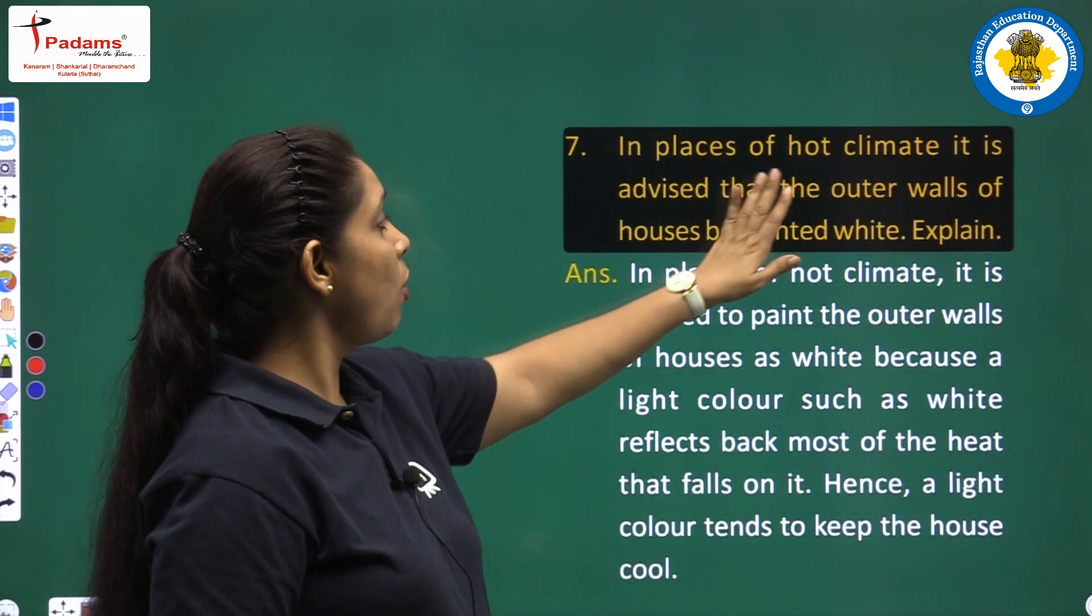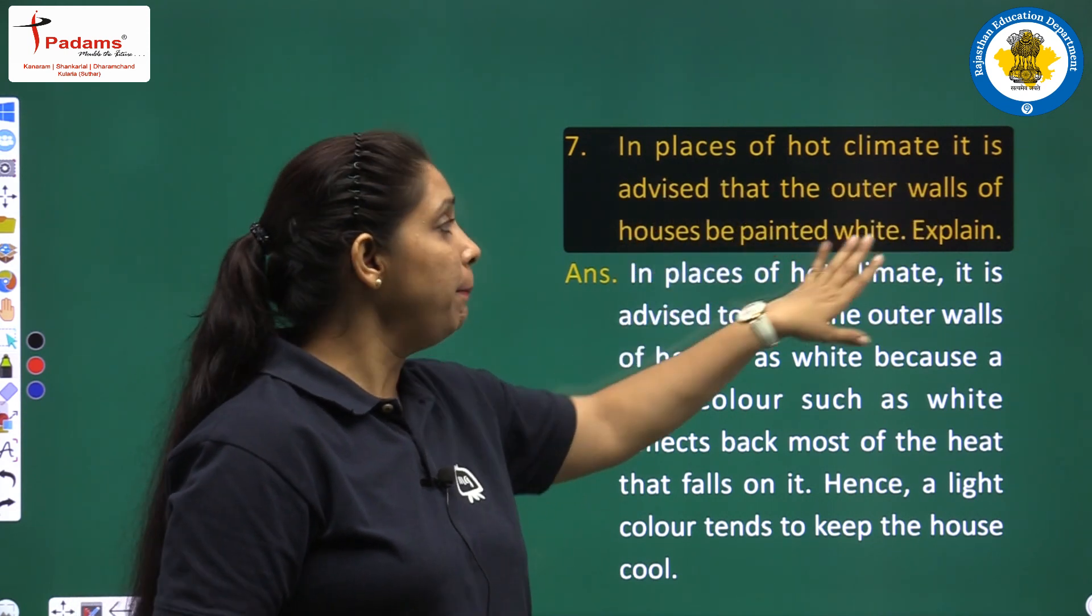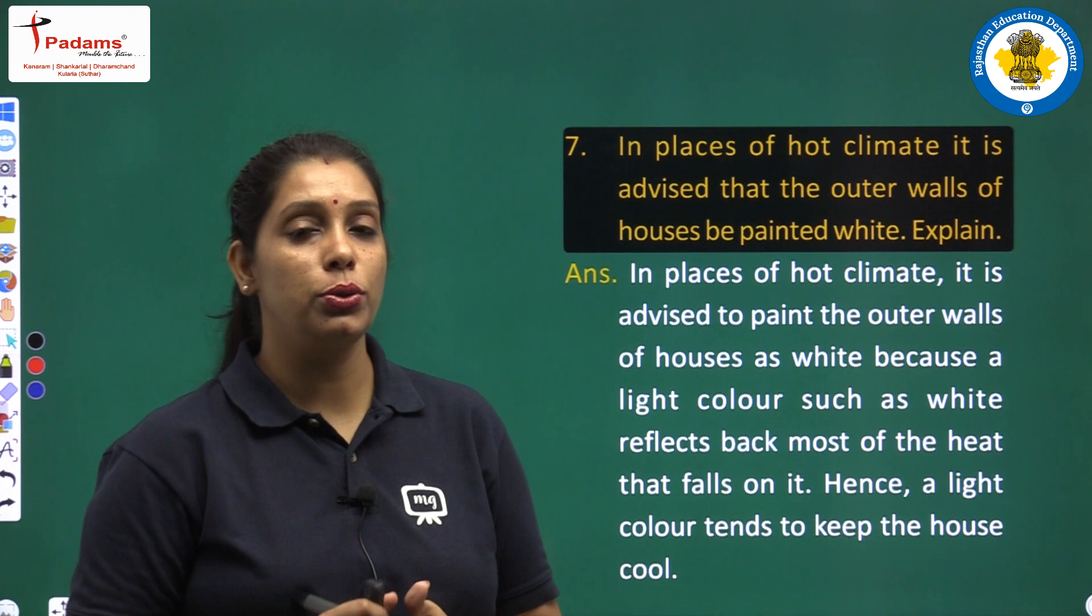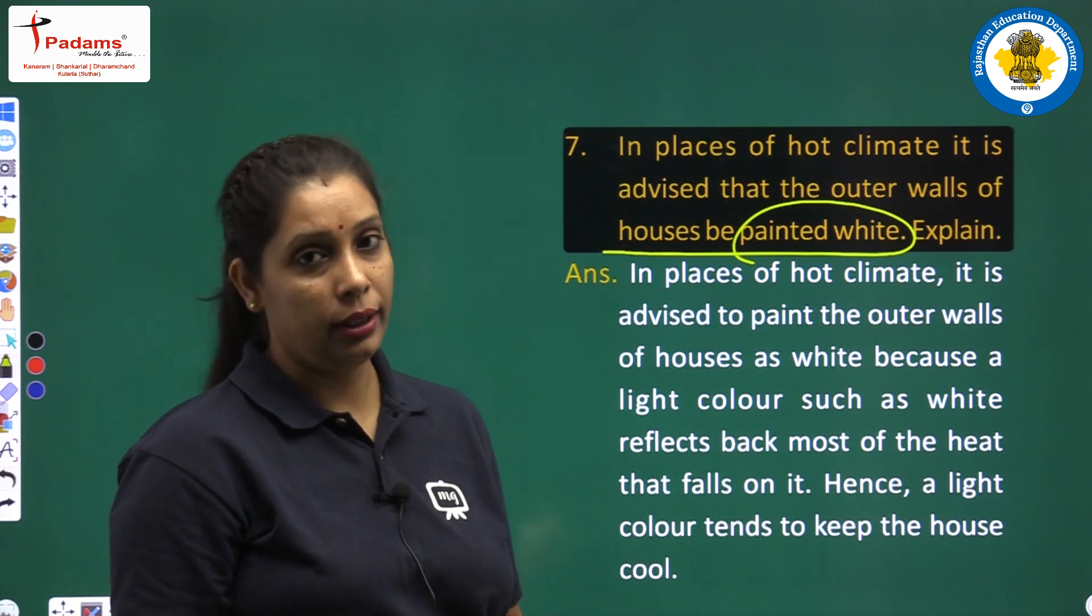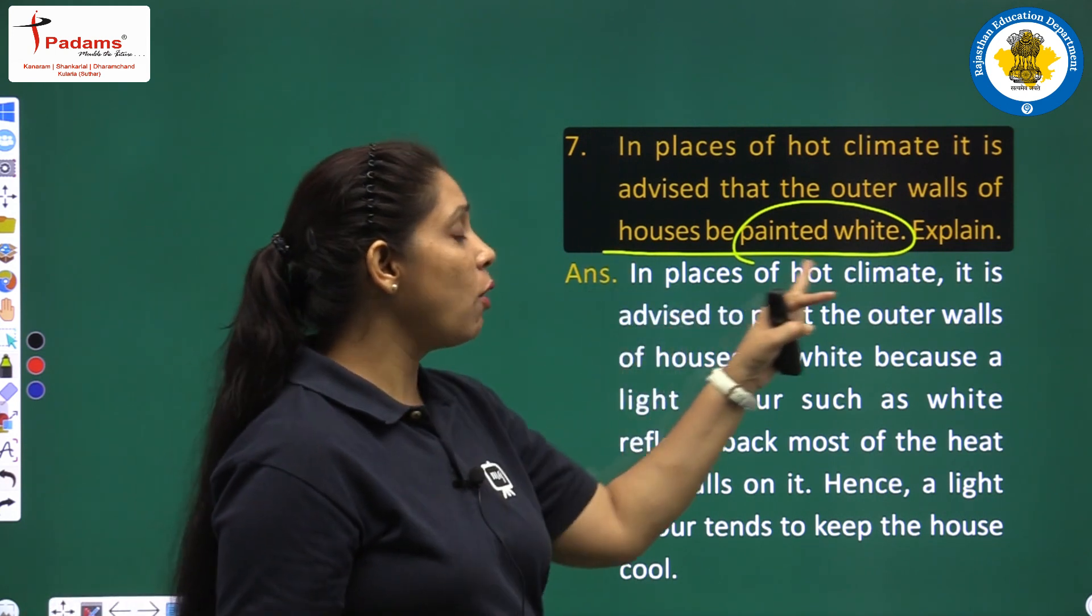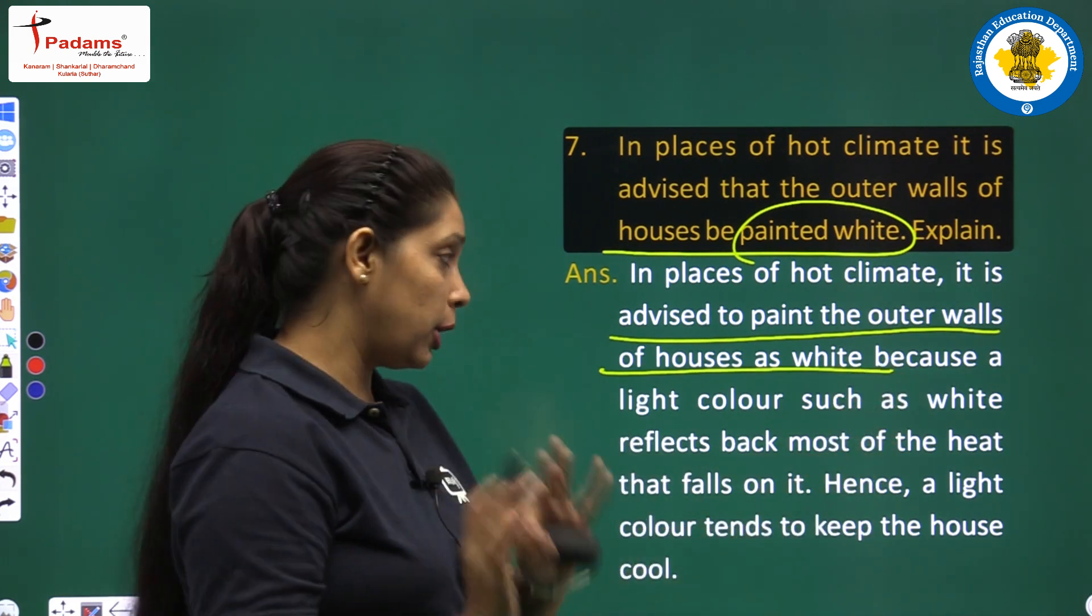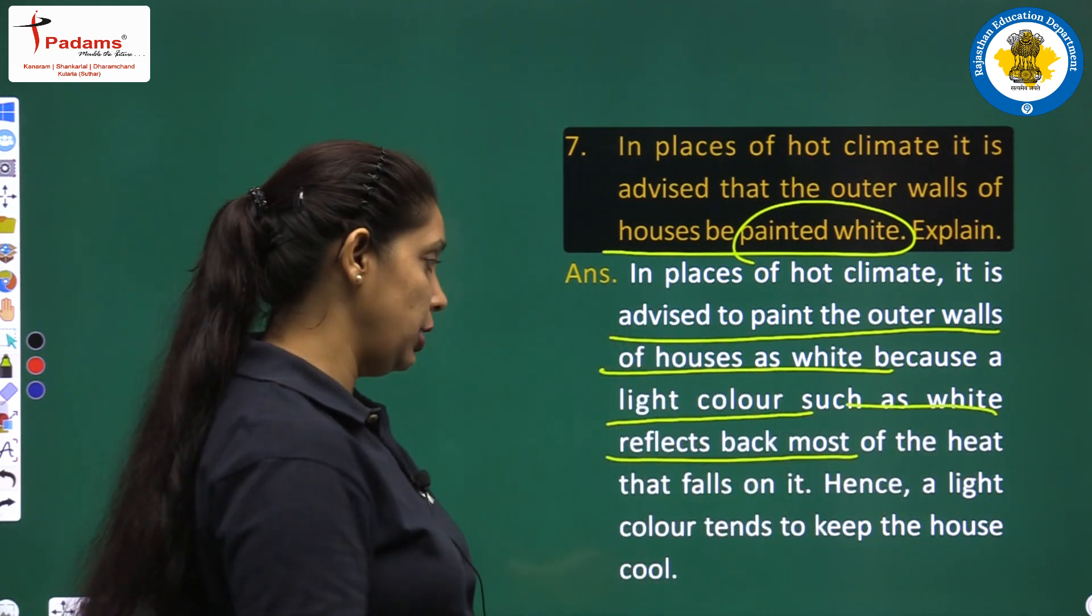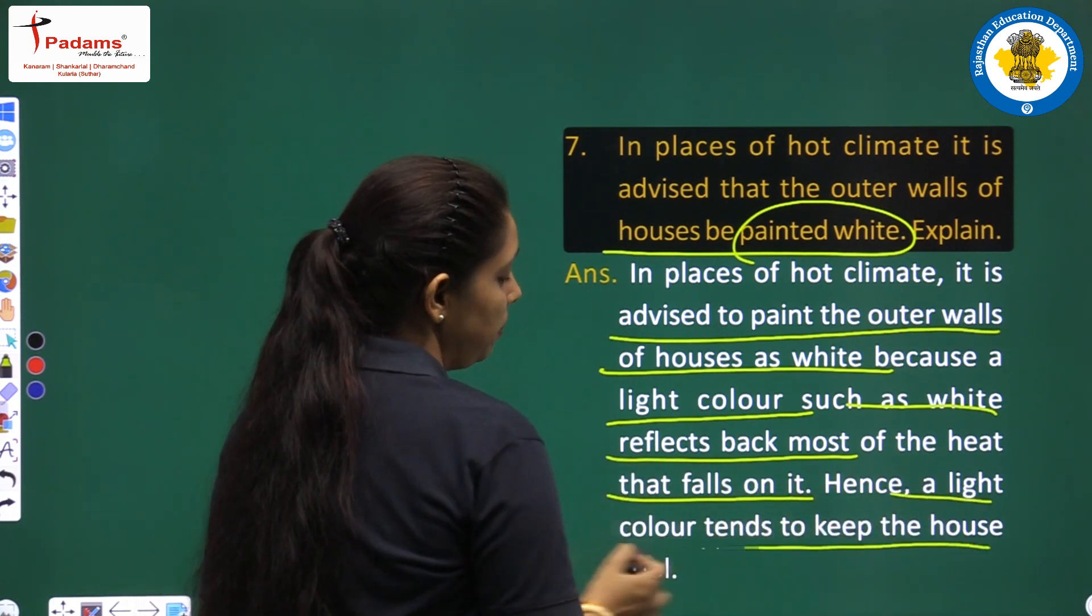Next question: In places of hot climate, it is advised that outer walls of houses be painted white. In places where there is hot climate, the outer walls should be white. Why? Because white is a good reflector. In places of hot climate, it is advised to paint outer walls of houses as white because light colors such as white reflect back most of the heat that falls on it. And hence, a light color tends to keep the house cool.